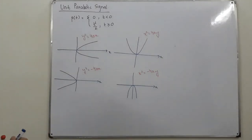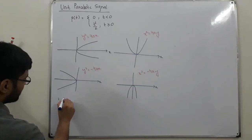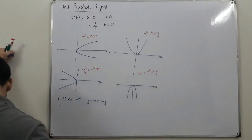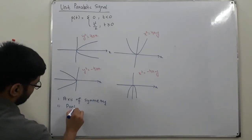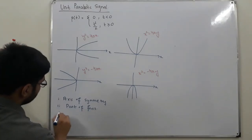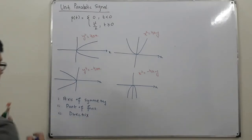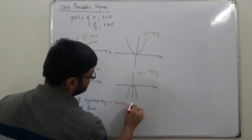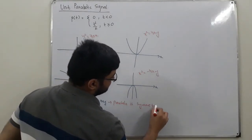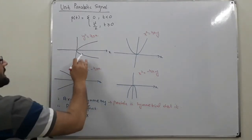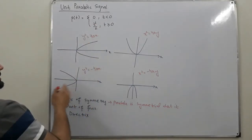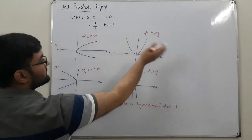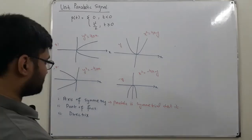When dealing with parabolas, you need to understand three things: first, the axis of symmetry; second, the point of focus; and third, the directrix. The axis of symmetry is the axis about which the parabola is symmetrical. For example, this parabola is symmetrical about the x-axis; this one about the negative x-axis; this one about the y-axis; and this one about the negative y-axis.